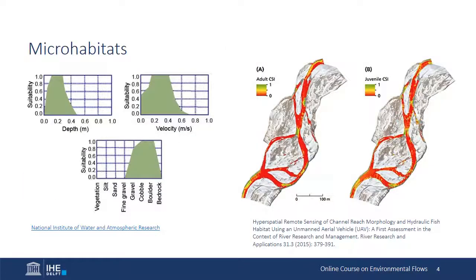In the context of e-flows, biologists characterize microhabitats in terms of water depth, velocity, wetted width of the channel, the grain size of bed sediments, and the cover provided for shelter. Relationships between these variables and suitability for particular species and life stages are formulated as shown in the figure on the left.